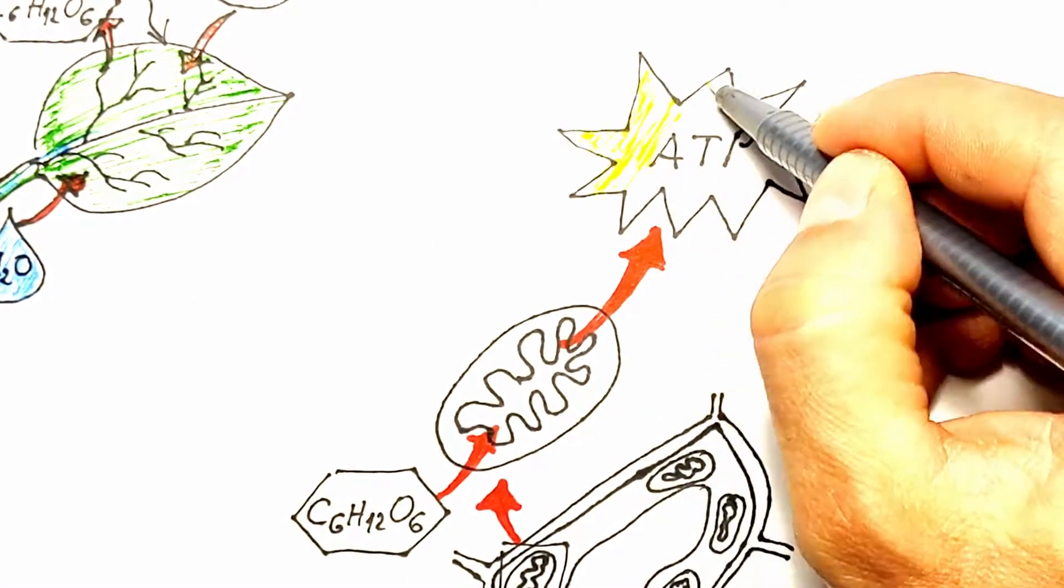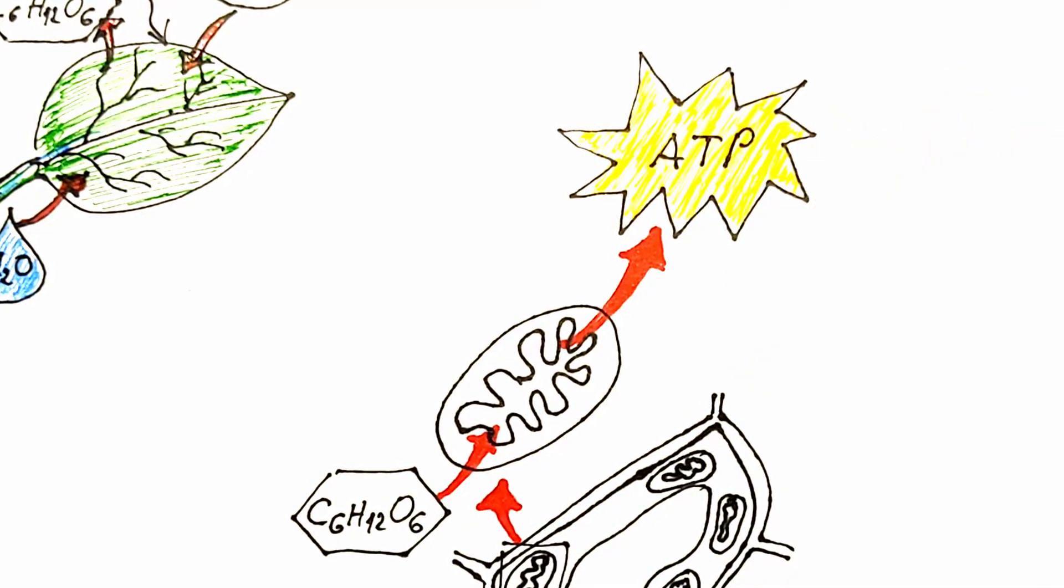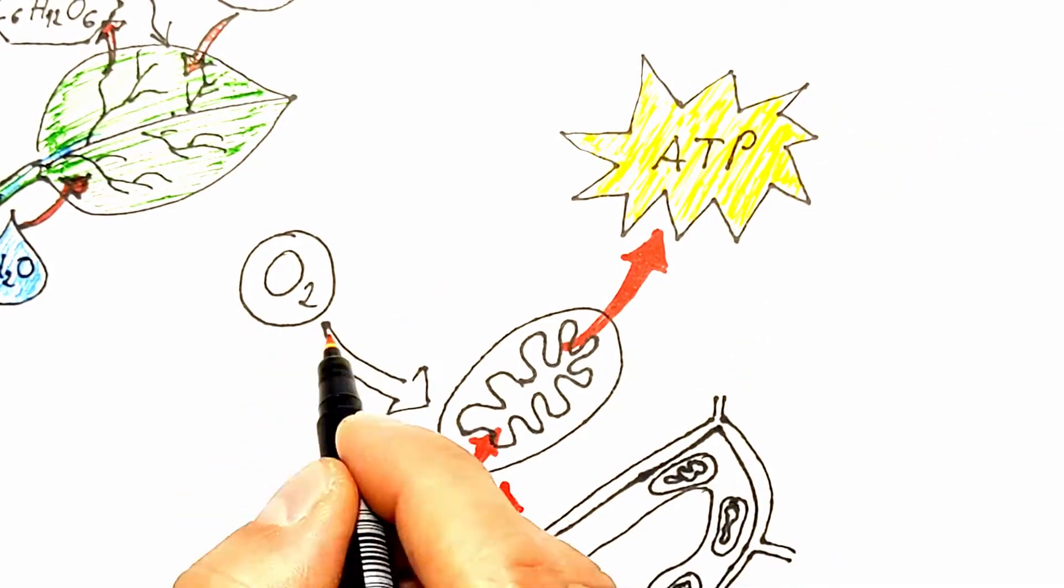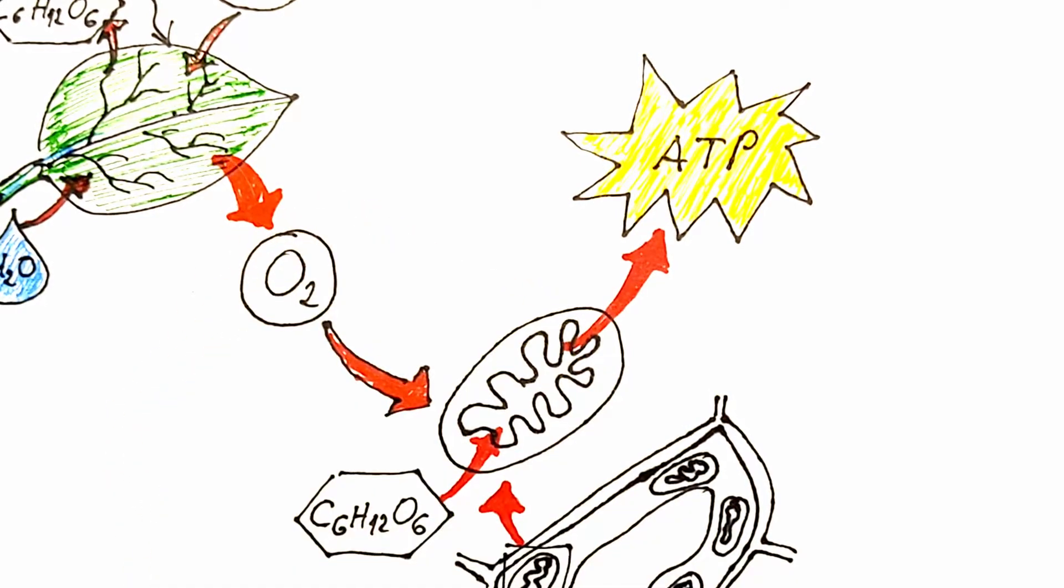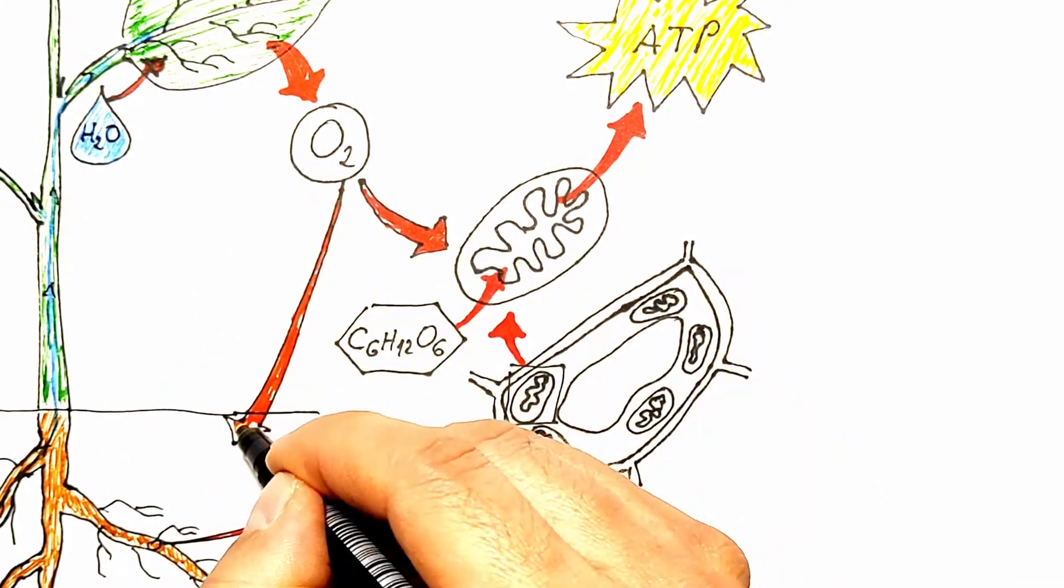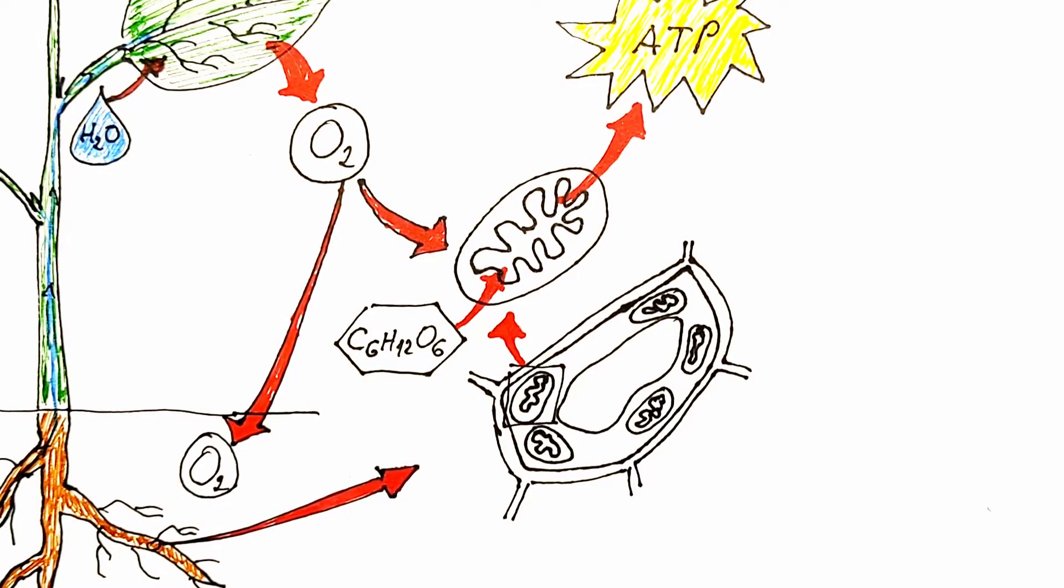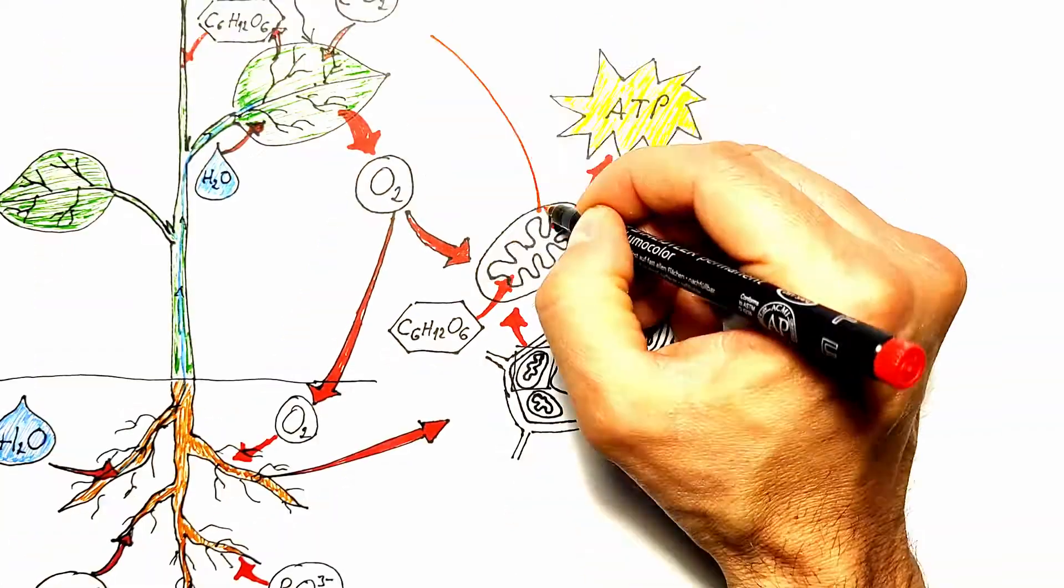Although the plant produces large amounts of oxygen during photosynthesis, almost all of it is released from the leaves into the atmosphere. So for the purposes of cellular respiration, the plant takes most of the oxygen through the roots.